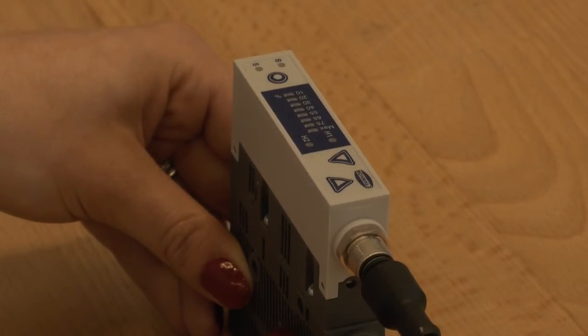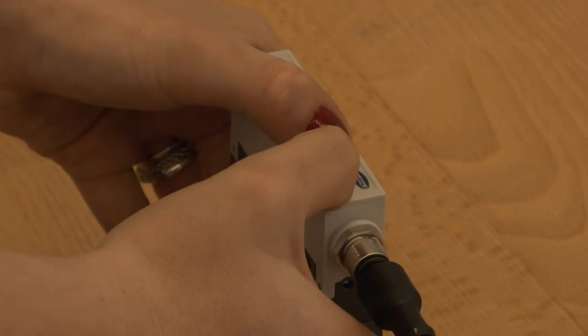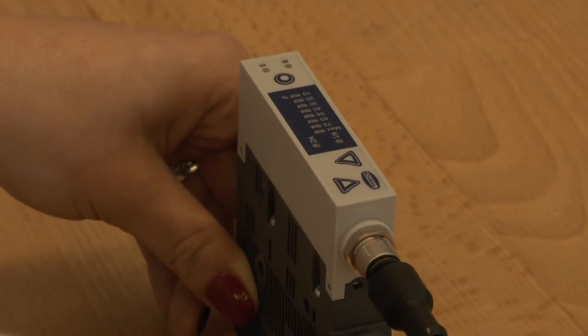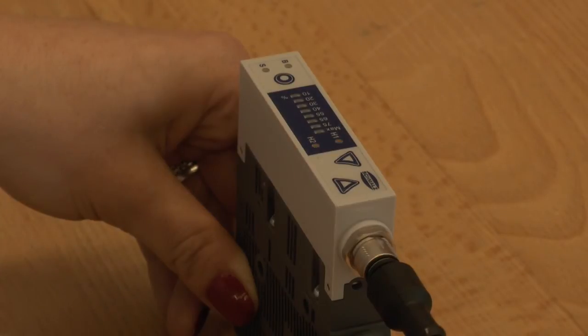You can switch to the manual operation mode by pressing the up and down button at the same time for more than three seconds. The manual operation mode is used for setup of the system.